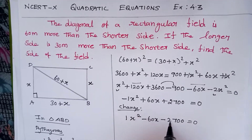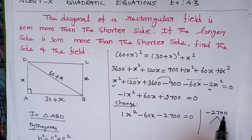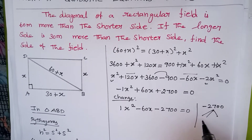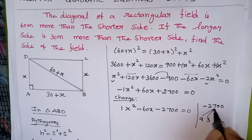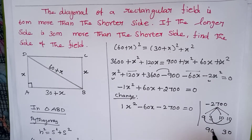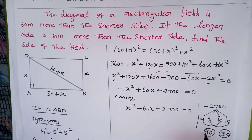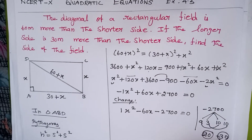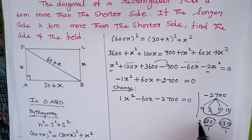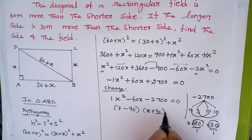Now we factorize x² − 60x − 2700 = 0. We need two numbers whose product is 2700 and difference is 60. We can split 2700 as 90 × 30. So 90 and 30 give a product of 2700 and a difference of 60. Since we need minus 60, we give the minus sign to the larger number. So the factors are (x − 90)(x + 30) = 0.